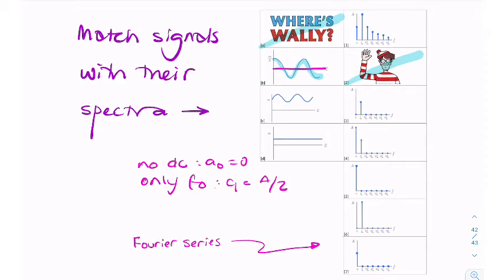The second one looks like it could be it because there's no DC and there's a fundamental of amplitude roughly half a. So I think we have a match. So that looks like it would be the correct answer for the first signal.